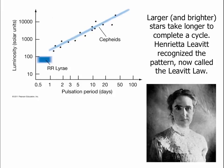Back when we talked about the Harvard Women Computers, we talked about Henrietta Leavitt who worked on variable stars. She was the woman who discovered Cepheid variables and a related type of variable star called an RR Lyrae star. What she noticed is that stars that were intrinsically brighter — stars that were more luminous — took longer to complete a cycle. In part because they're just larger stars, and something bigger is going to take longer to go through a pulsation than something smaller. This relationship between how bright a Cepheid star is and how long it takes to pulsate is called the Leavitt law.